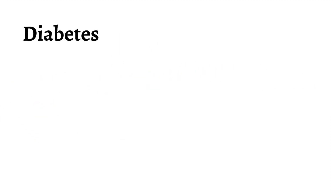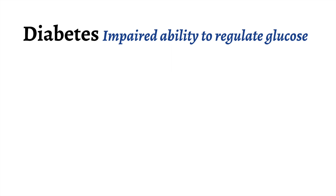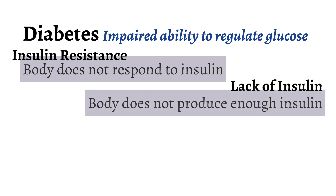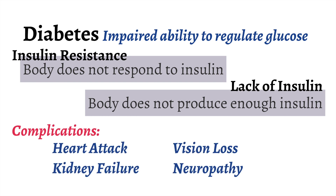Diabetes is when our ability to regulate glucose levels becomes disturbed, resulting in high glucose levels in the blood. Typically, the disruption is either due to the body not responding to insulin as well as it should be — called insulin resistance — or the body not producing enough insulin. The high levels of glucose that result can lead to serious complications like heart attack, kidney failure, loss of vision, and debilitating pain in the arms and legs, called neuropathy.